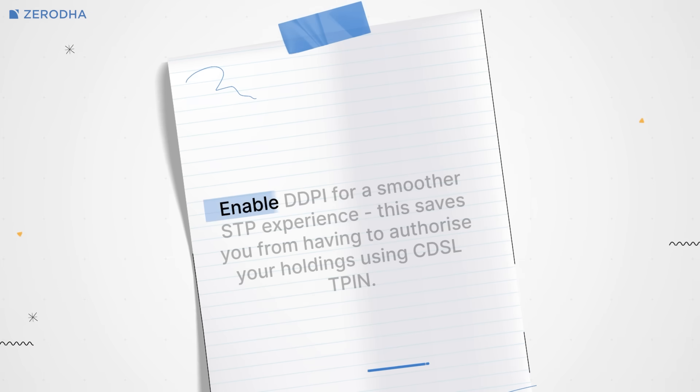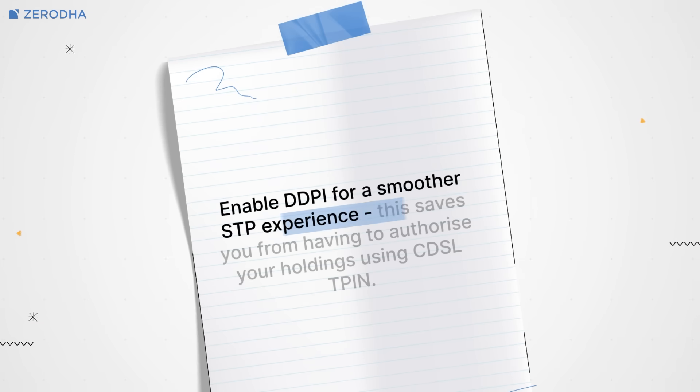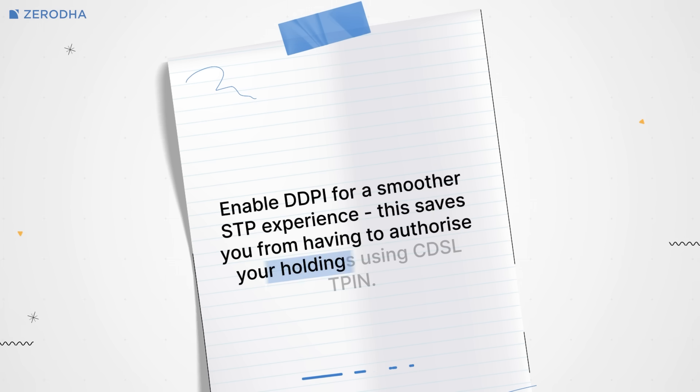Here are a few important things to remember. Enable DDPI for a smoother STP experience, as this saves you from having to authorize your holdings using CDSL TPIN. To learn how to enable DDPI, check out this link.